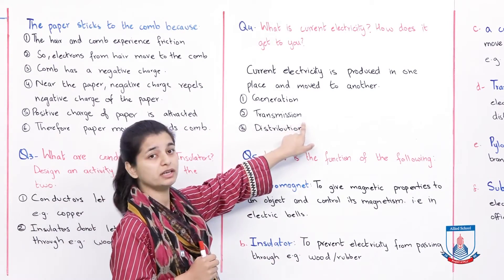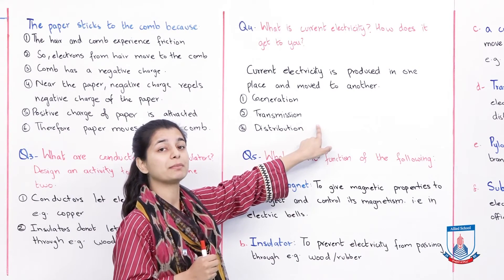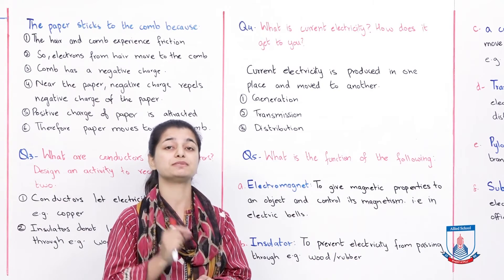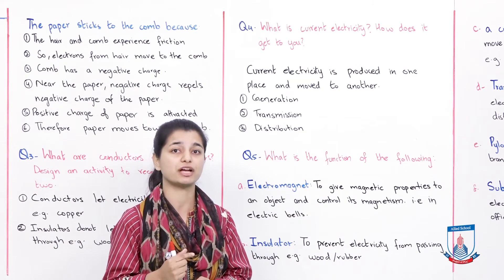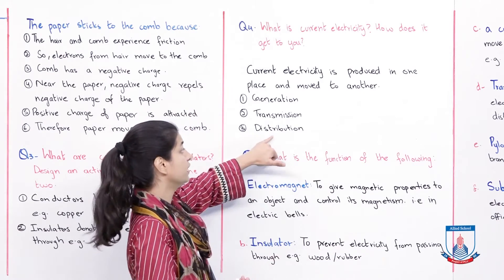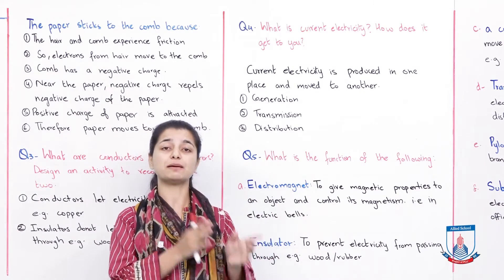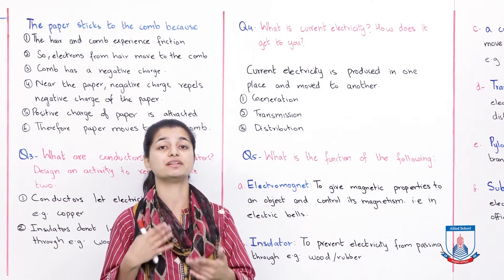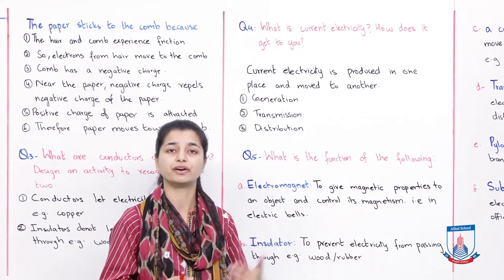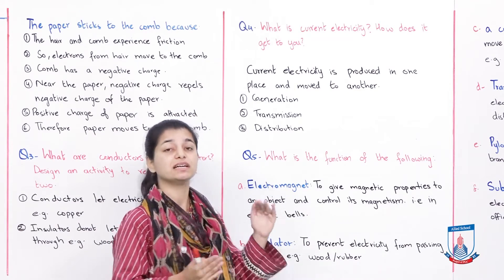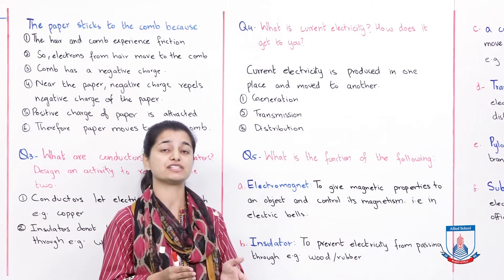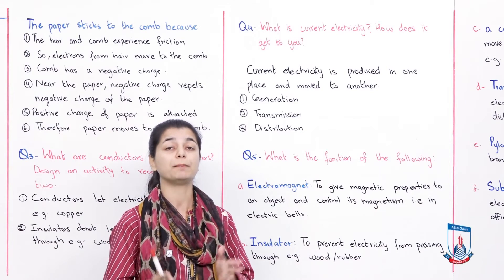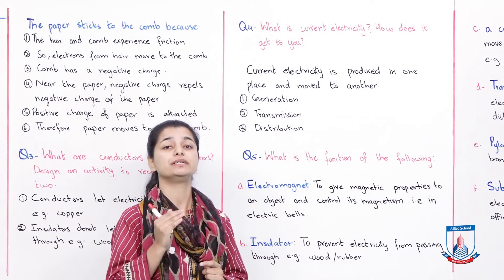The second stage is transmission. The electricity is sent through electric grids and from there to substations, where the power can be adjusted so it can go to houses. The third stage is distribution. From the substations, electricity goes to its final destinations — either through overhead wires or underground cables. These three stages have been explained very well in the previous lecture from this chapter. Read your book and then write the question and answer in detail.